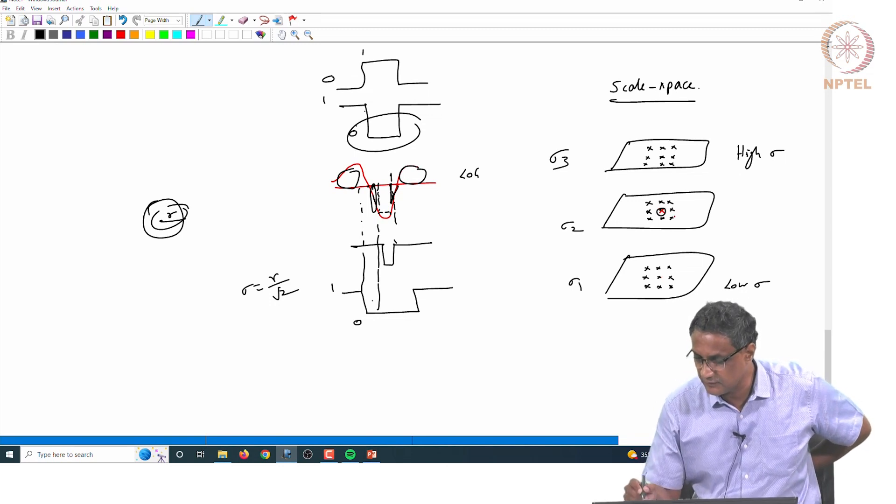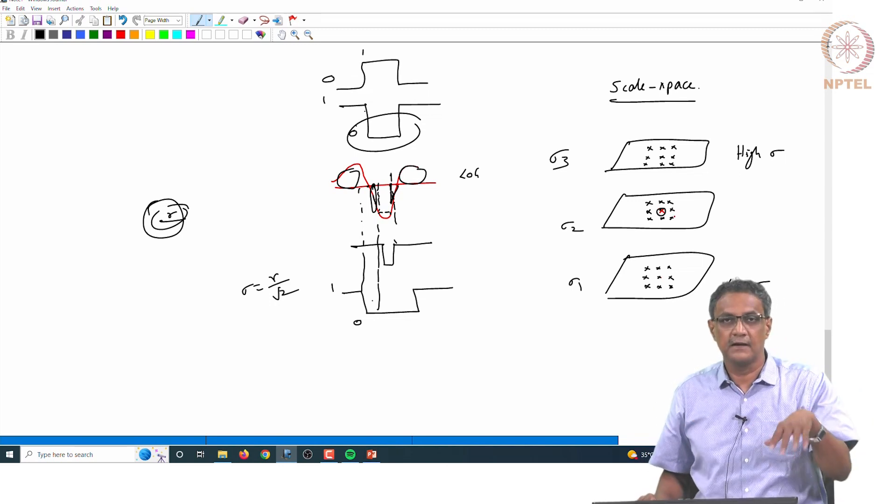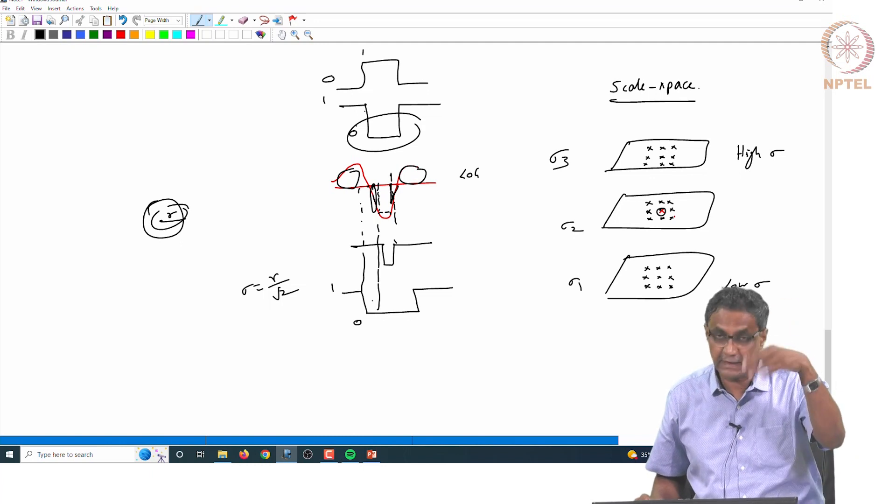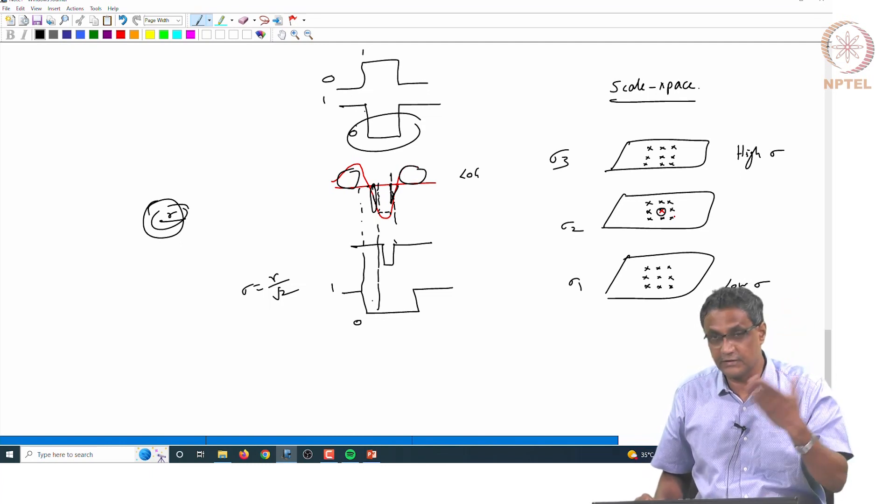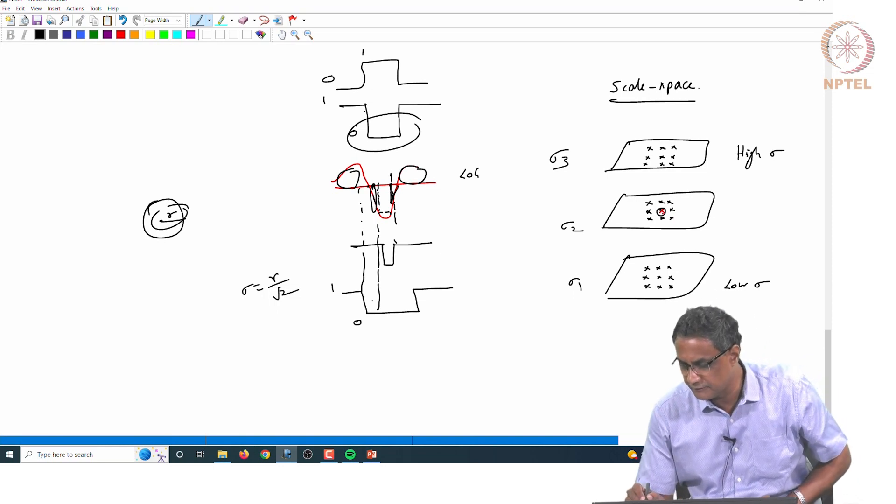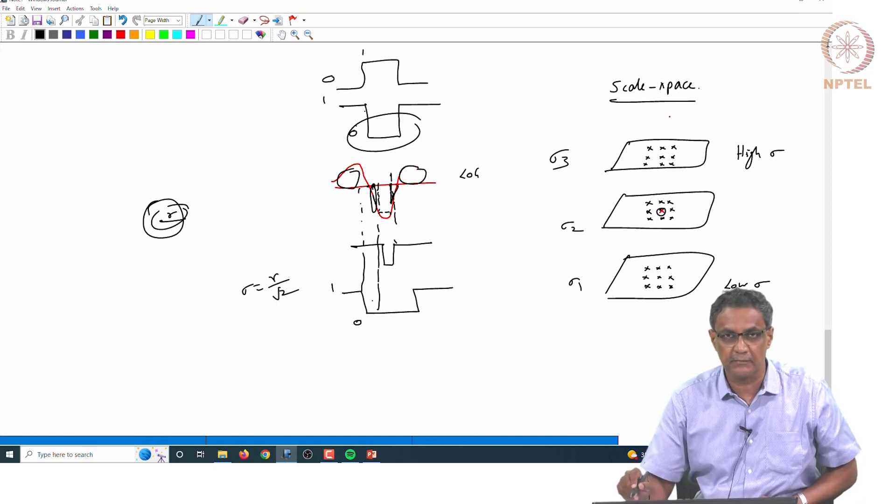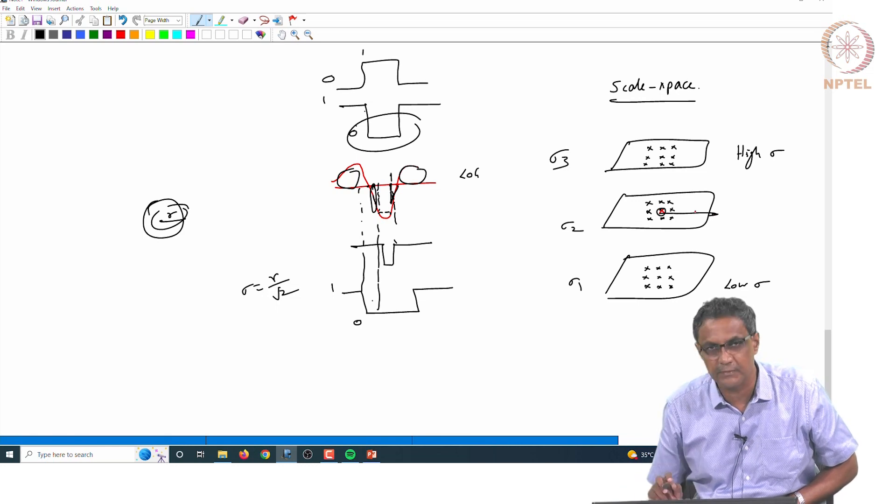This guy has got 26 neighbors - 8 at its own scale, then 9 above it and 9 below. 9 at a higher sigma, 9 at an immediately lower sigma. And if this turns out to be the highest among all of them, then you say this is a local extremum.